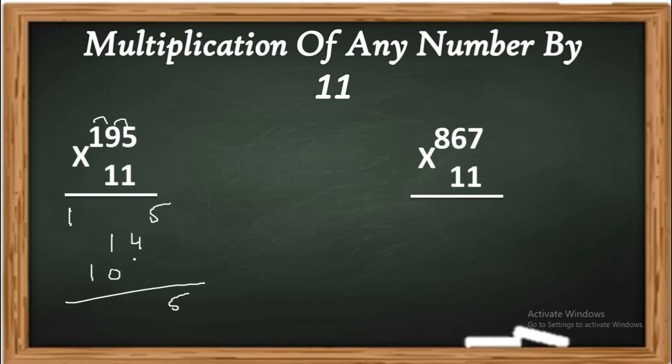5 as it is 5, 4 as it is 4, and 1 plus 0 is 1, and 1 plus 1 is 2. And the final answer is 2145. 195 into 11 is 2145.